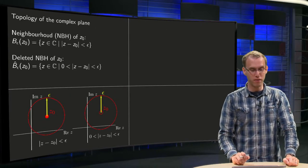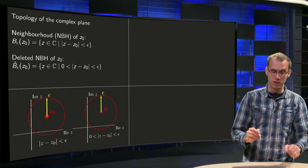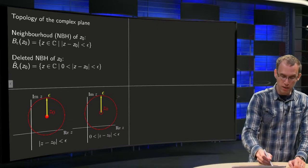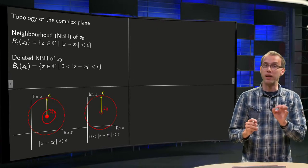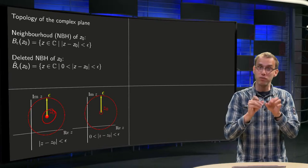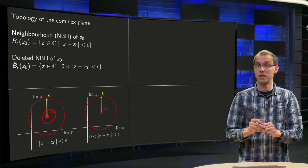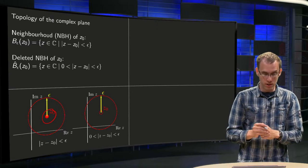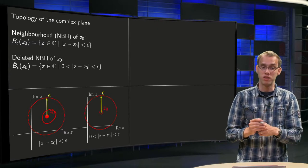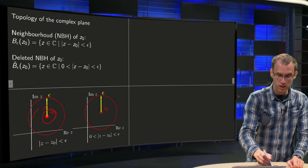So how does that look in a figure? A neighborhood of z₀ first. Here we have our z₀ and I make a full dot to show that z₀ is part of the set. Then we have a disk around it, radius ε, and a neighborhood of z₀ is the set of all points inside here.